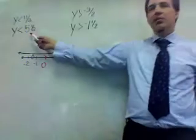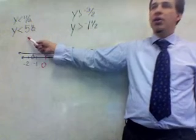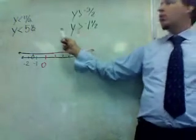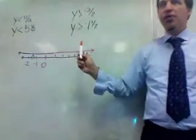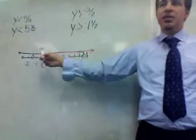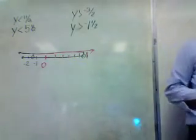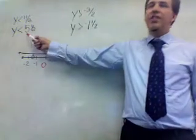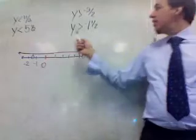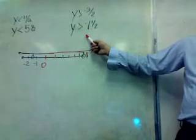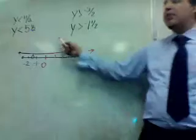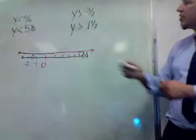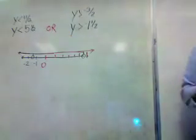Is seven less than five and a half? No. But it is greater than negative one and a half. It's true for one or the other or both, so it's true for all these numbers. Take negative five — is it less than five and a half? Yes, so that's true. Is it greater than negative one and a half? No. But it doesn't need to be. It only has to be true for one of them. So that's an 'or' statement.